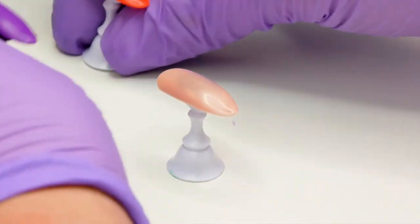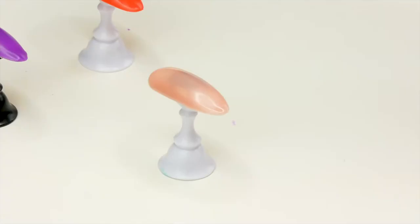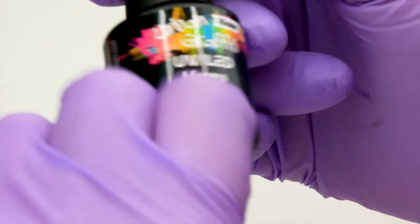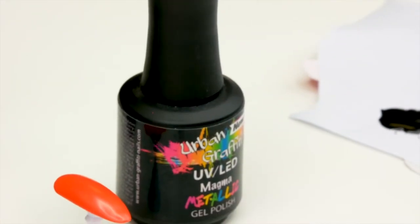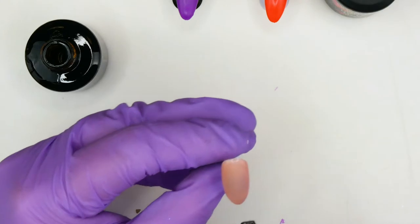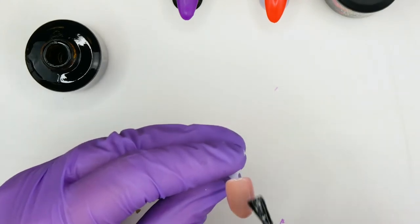The first nail we're going to do is the one with Shy Time. For this one we're going to need some Magma, which is in the metallic range. Before I do that, I need to top coat this nail because the metallics need to go on a shiny surface.